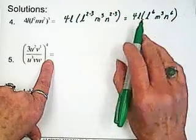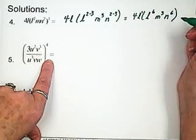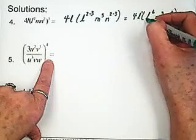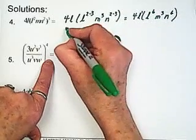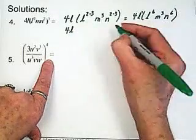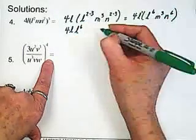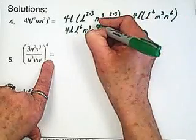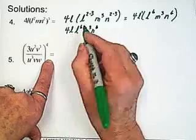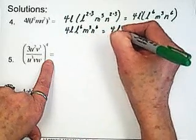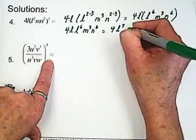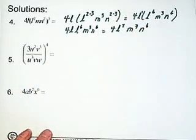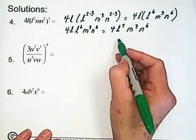Now at this point, we take this l, which has the power of 1, or exponent of 1, and multiply it here. So we're going to be adding exponents. So again, what we have here is 4l times l to the 6, m cubed, n to the 6. These two, we add the exponents, so it becomes 4l to the 7, m cubed, n to the 6. And that's the final answer right there.